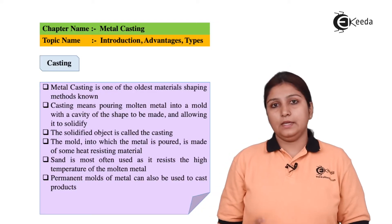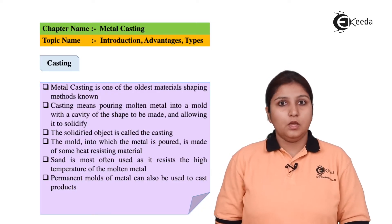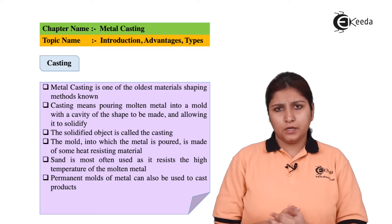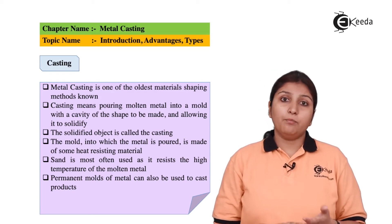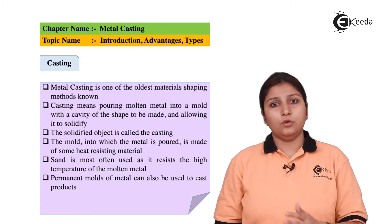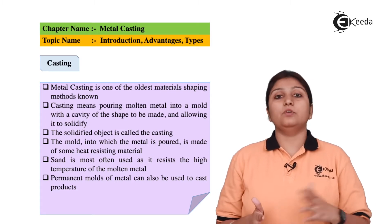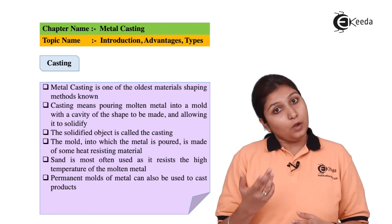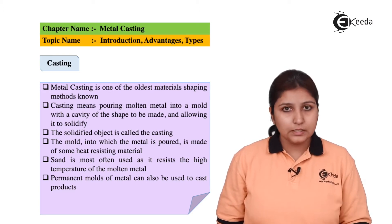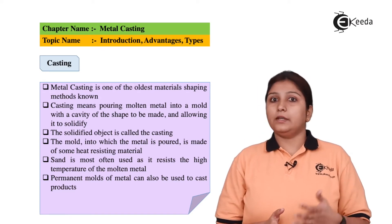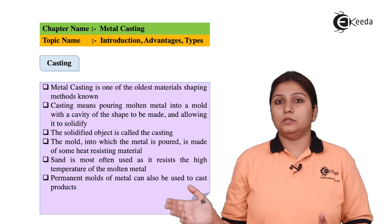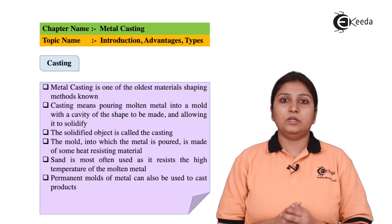What do we do exactly in the metal casting process? We take a pattern which can be of any material — like wood, metal, plastics, or even ceramics. The most commonly used pattern material is wood, but there are many different materials that can be used as a pattern.